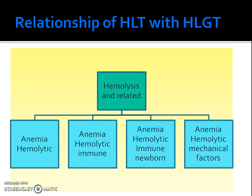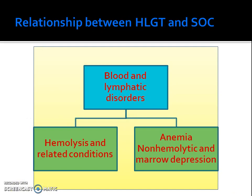The relationship of high level terms with high level group terms: anemia hemolytic, anemia hemolytic immune, anemia hemolytic immune of the newborn, and anemia hemolytic due to mechanical factors can all be grouped together to give one high level group term — hemolysis and related conditions. We are gradually proceeding to become more and more specific to the disorder of interest. Finally, these high level group terms — hemolysis and related conditions, and anemia non-hemolytic and marrow depressions — can both be grouped together under the system organ class: blood and lymphatic disorders.